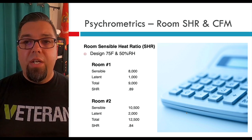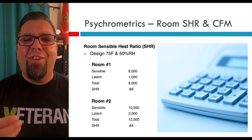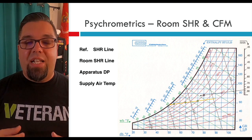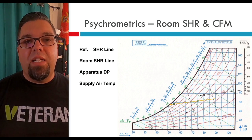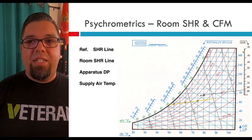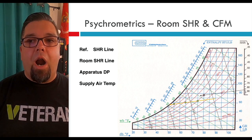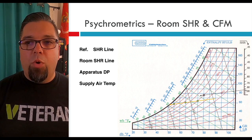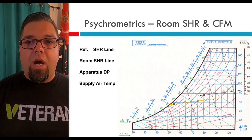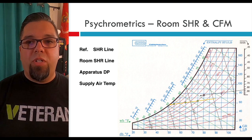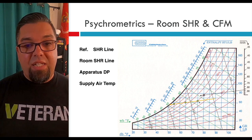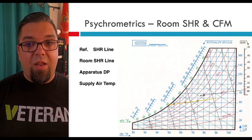I'm going to move on to the next screen which will have a few lines, and I'll tell you how to draw these lines on your psychrometric chart. The first line we're going to draw — that black line — is our reference sensible heat ratio line. On the right-hand side, you can see the sensible heat ratio bar. We're going to go down to 0.84, and draw a line through our standard air mark at 80 degrees and 50% relative humidity. That's our reference line.